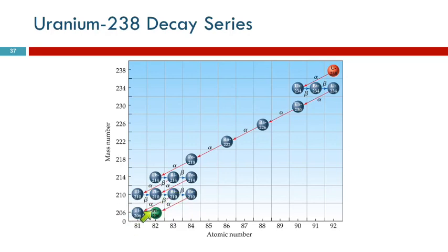Eventually all of these things end up at lead-206. The amount of lead in the environment is slowly increasing because it's the ultimate product from the decay of uranium.